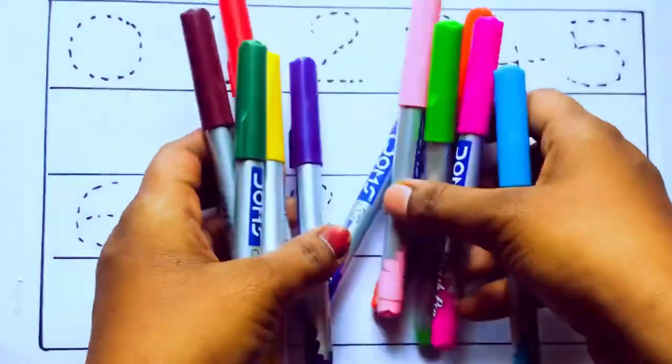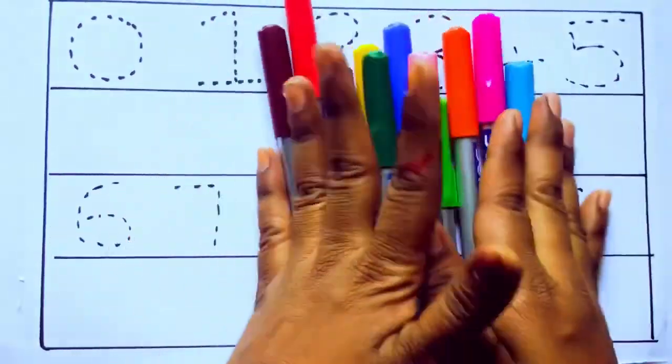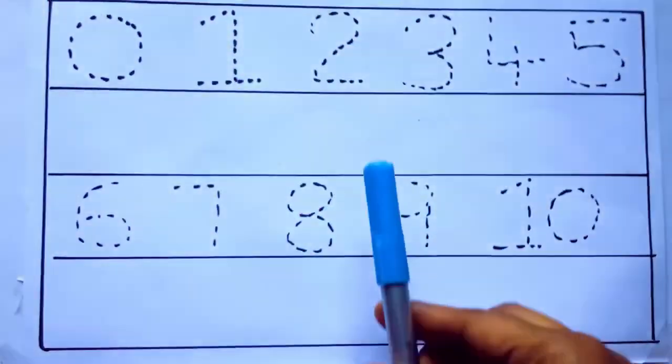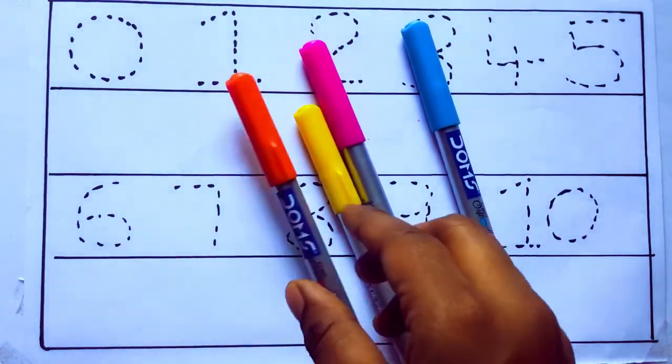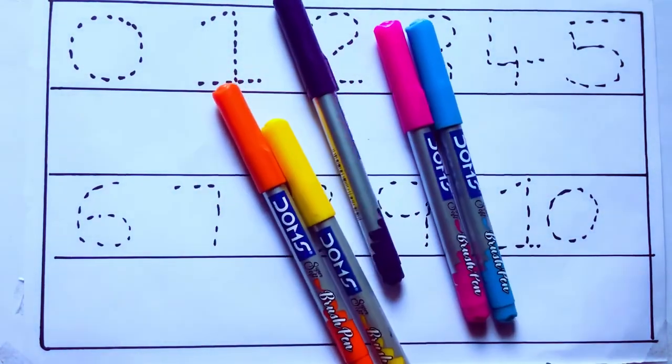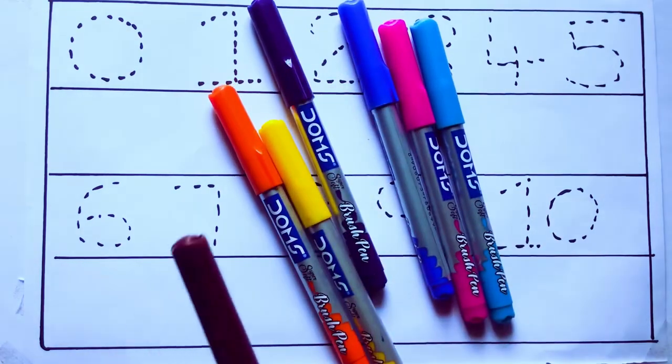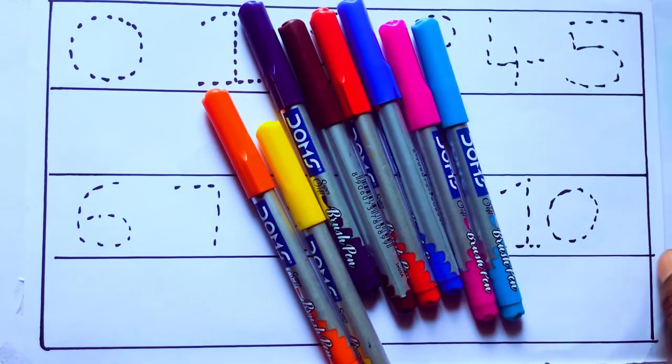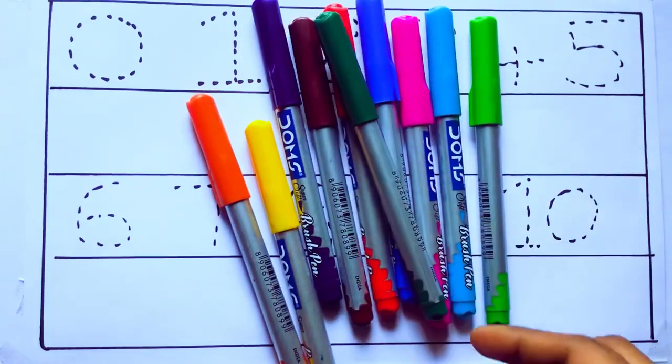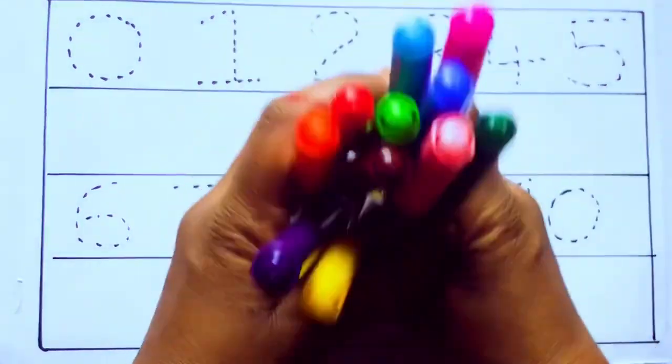Let's learn some colors. These are all the color pencils. Let's learn the names: sky blue color, pink color, yellow color, orange color, violet color, blue color, brown color, red color, green color, and pink color.